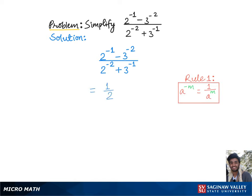According to which we'll get 1 over 2 to the 1 is 2, minus 1 over 3 squared is 9, divided by 1 over 2 squared is 4, plus 1 over 3 to the first power is 3.